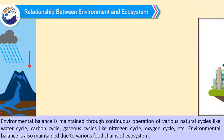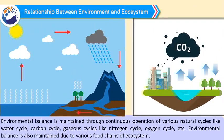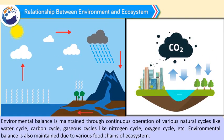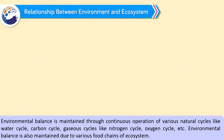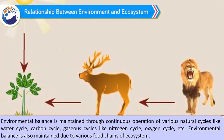Environmental balance is maintained through the continuous operation of various natural cycles, like the water cycle, carbon cycle, and gaseous cycles like the nitrogen cycle, oxygen cycle, etc. Environmental balance is also maintained due to various food chains of the ecosystem.